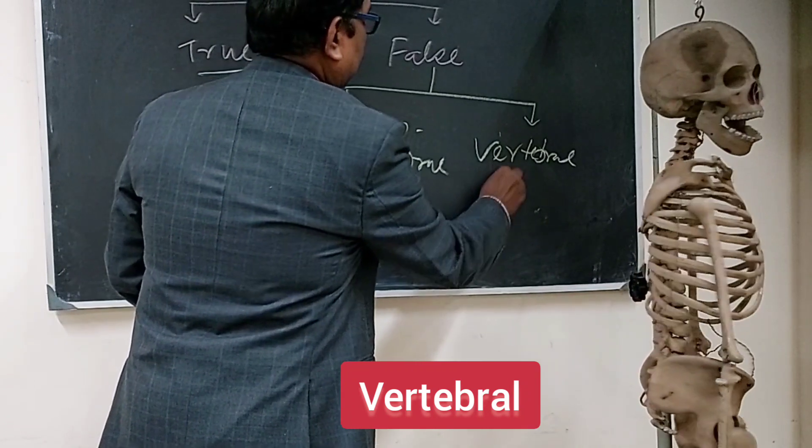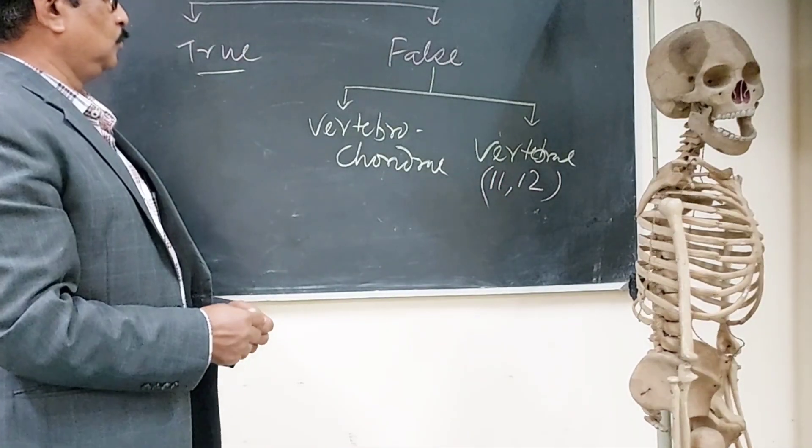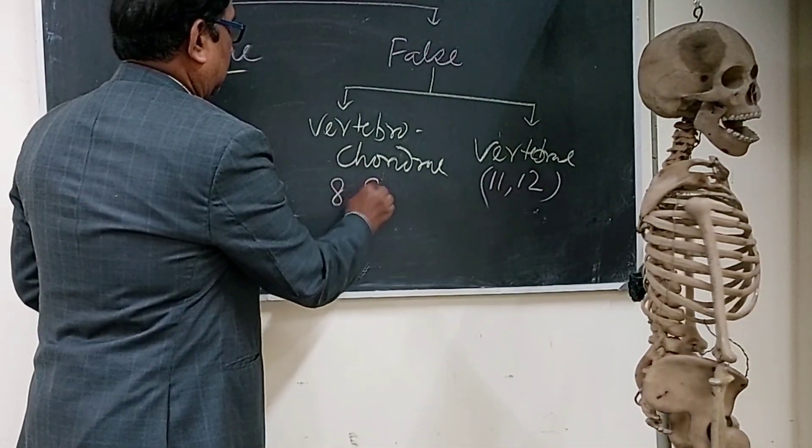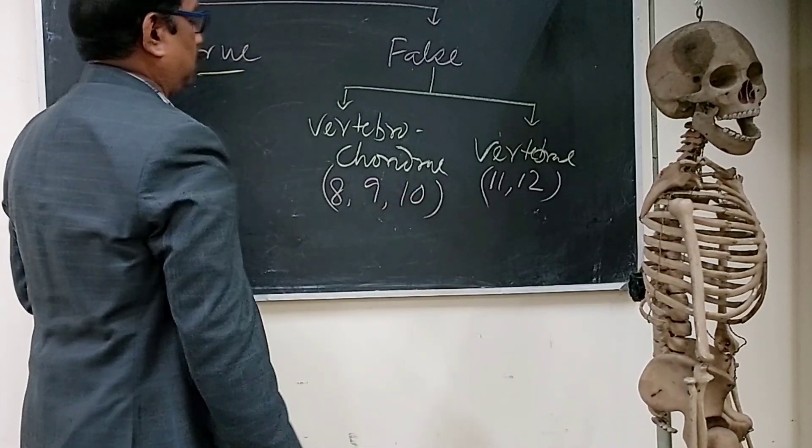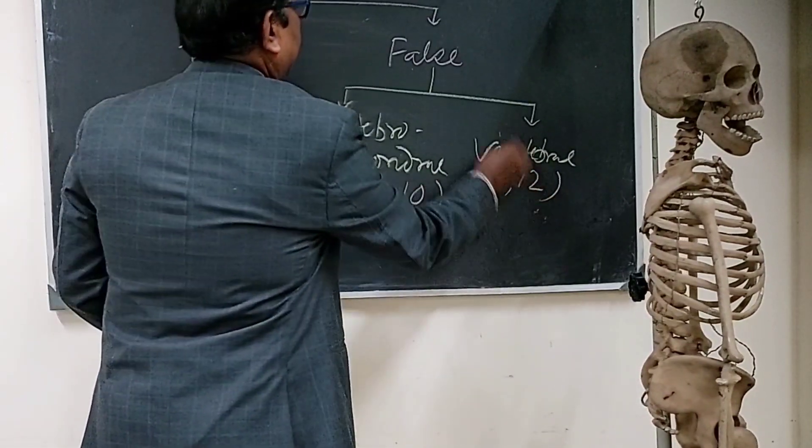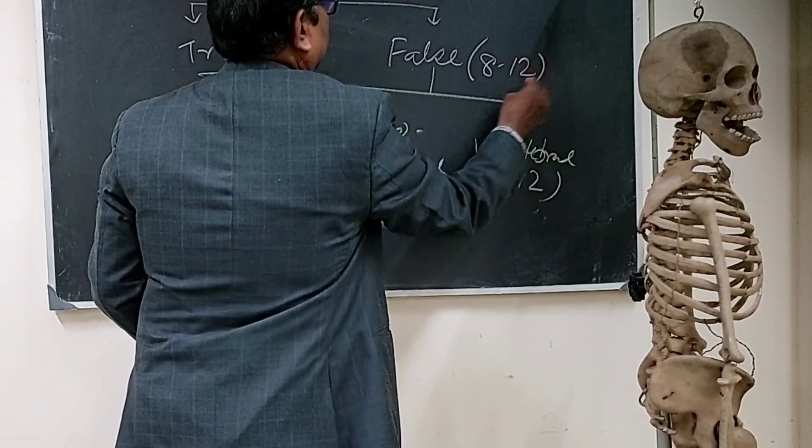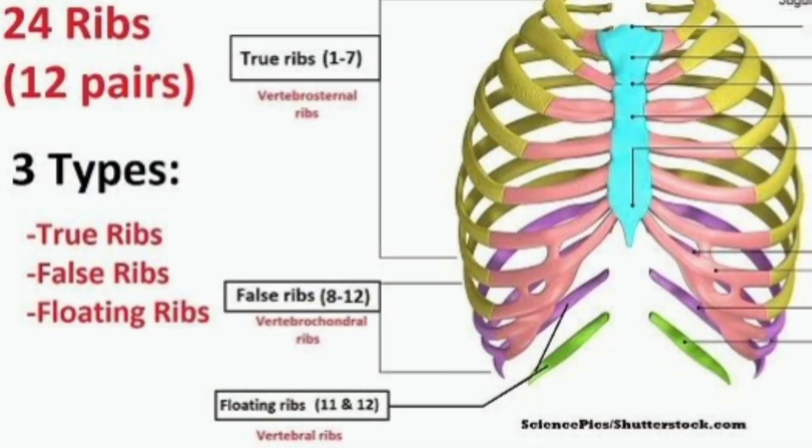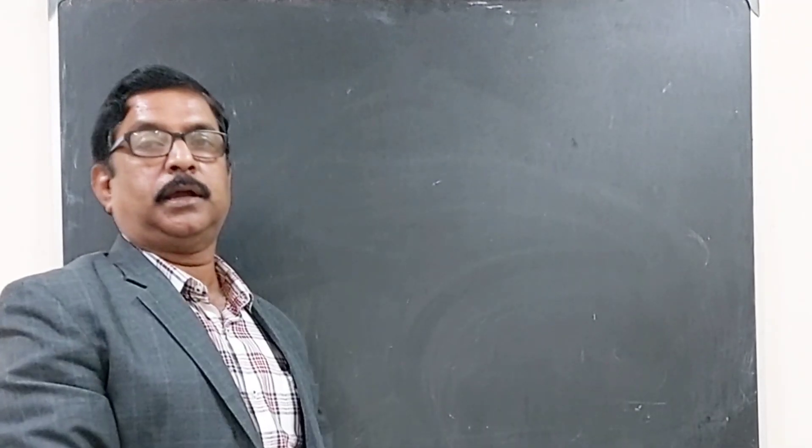So these two are 11th and 12th, these two, and these three - 8, 9 and 10. So 8 to 12 ribs are false ribs, 8 to 12. This is 5 in number. And from rib number 1 to rib number 7, these 7 ribs are true ribs. They are also called vertebrosternal. This is vertebrochondral. This is vertebral. So this is one classification of the ribs on the basis of articulation.